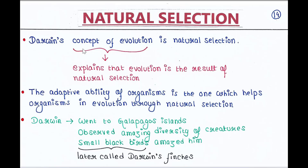Darwin's concept of evolution is natural selection. Darwinian theory of evolution explains that evolution is the result of natural selection. The adaptive ability of organisms is the one which helps organisms in evolution through natural selection.